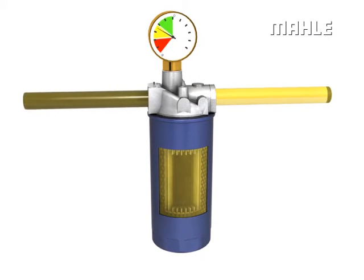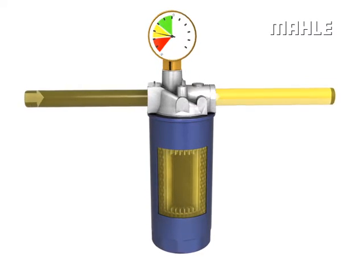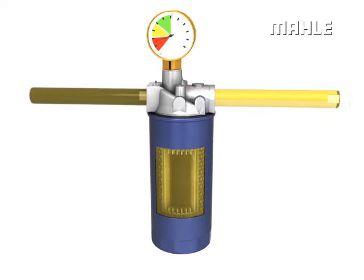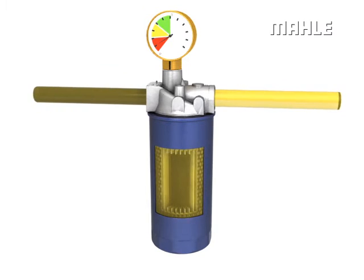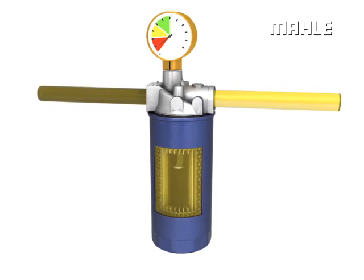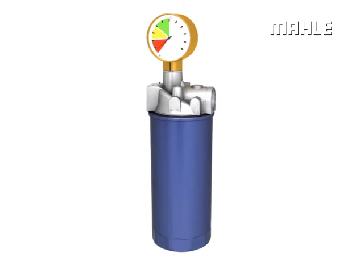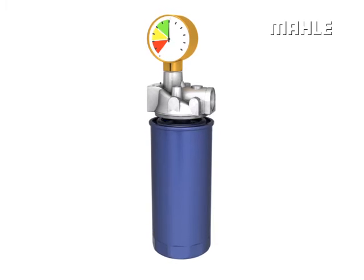When the dirt holding capacity of the filter element has been reached, the filter must be replaced. In this model, the spin-on cartridge is unscrewed completely and then replaced.